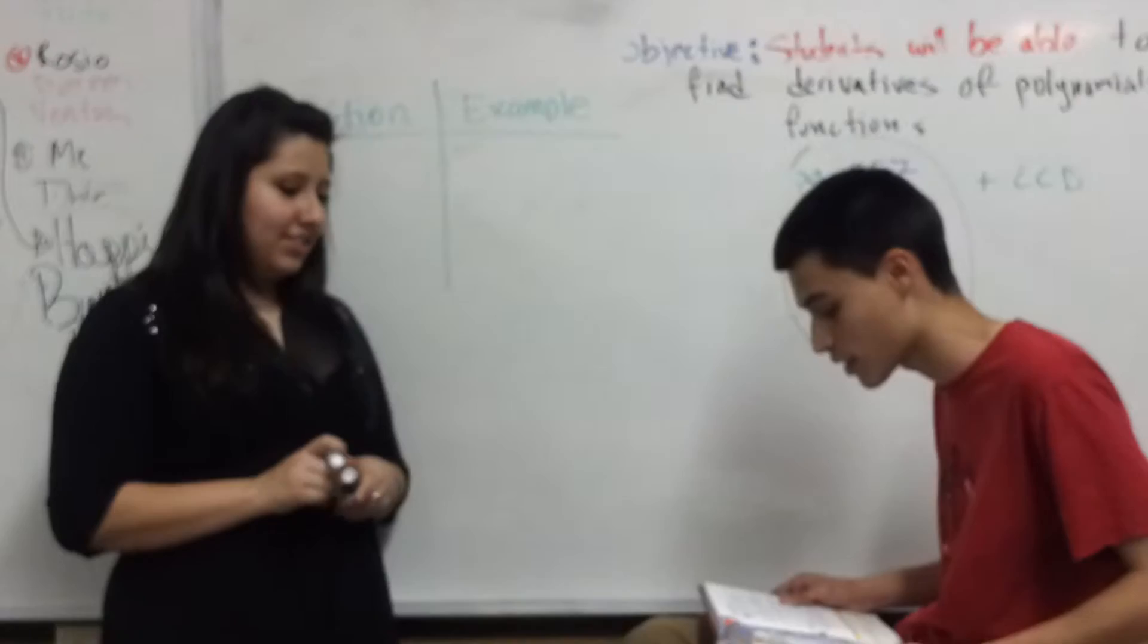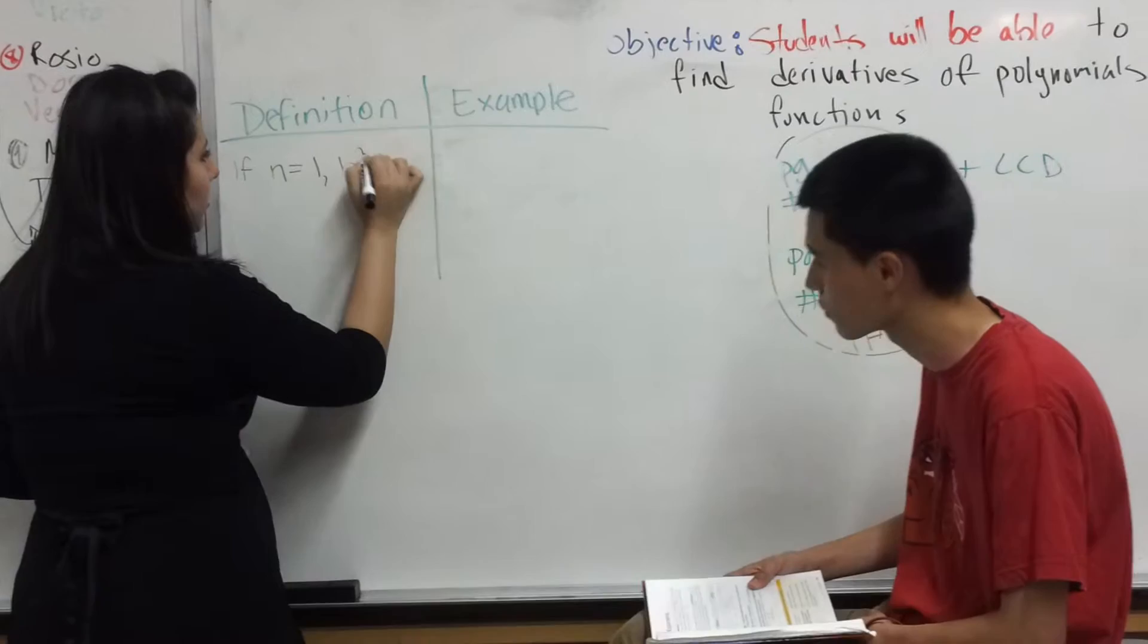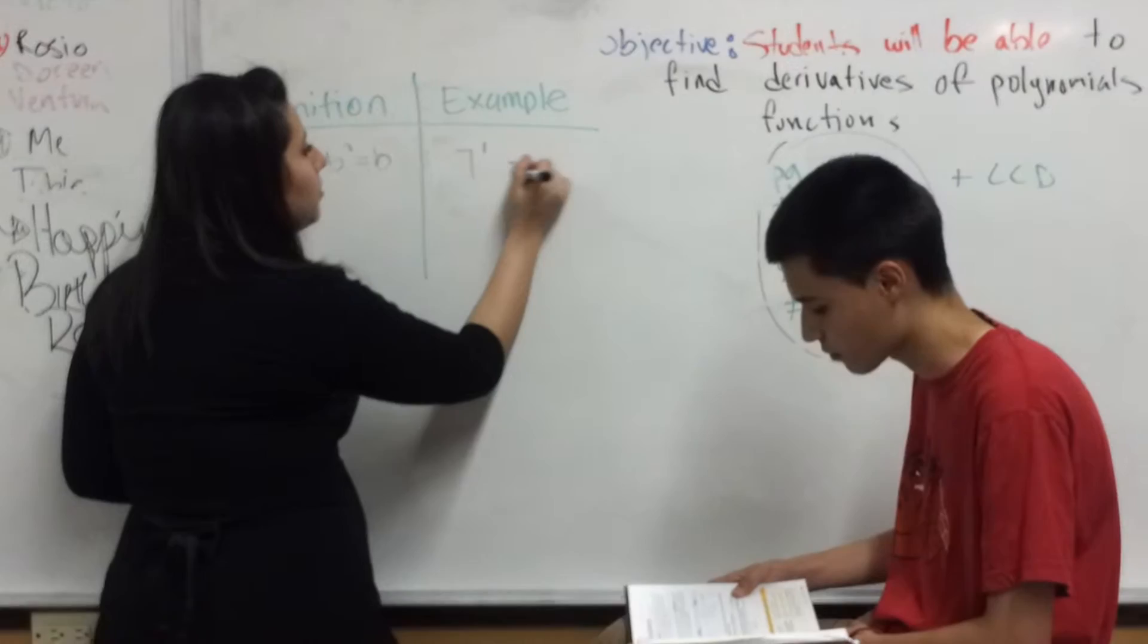The definitions are: if n equals 1, then b to the n equals b. So for example, 7 to the first power equals 7. The next definition is,